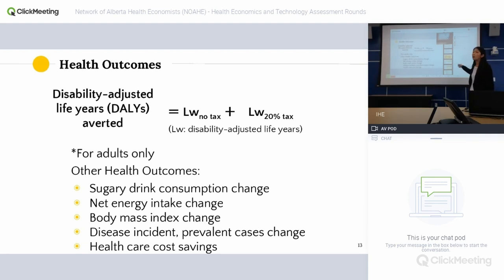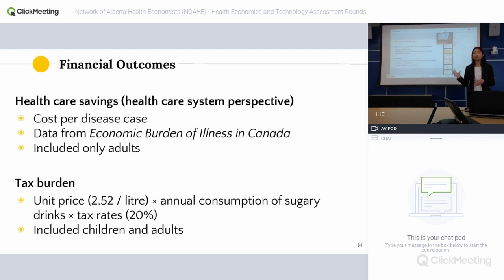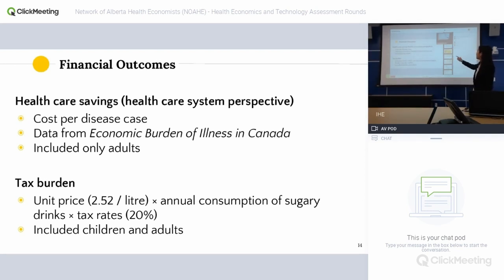Beyond DALYs, the model also produces sugar consumption change, net energy intake change, body mass index change, incidence and prevalence case changes, and healthcare cost savings. For healthcare cost savings we use a healthcare system perspective, calculating cost per disease case — for cancers we use cost per incident case, for chronic diseases cost per prevalent case. Data comes from the economic burden of illness in Canada, for adults only. For tax burden, we calculate unit price multiplied by annual consumption of sugar drinks multiplied by the 20% tax rate. The tax burden covers both children and adults.